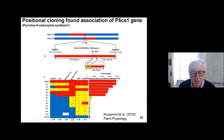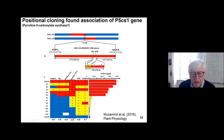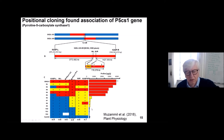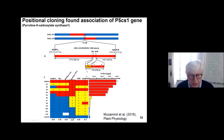The most interesting part is this column: whenever we have the wild form in this promoter region, we recognize an increase in proline. When genotypes were heterozygous at this position, we did not see that increase. And in the fully cultivated form, there was no large increase. This is a strong indication that the promoter of this candidate gene is relevant for proline accumulation.